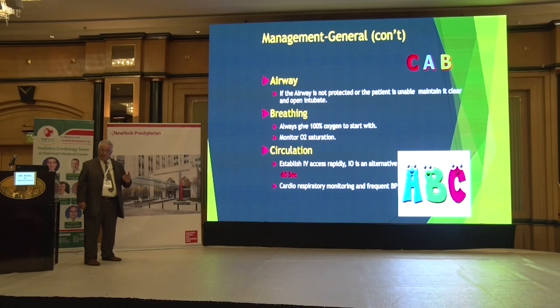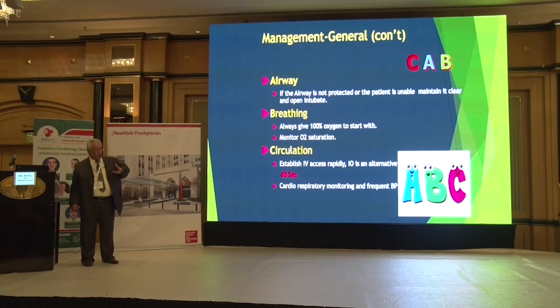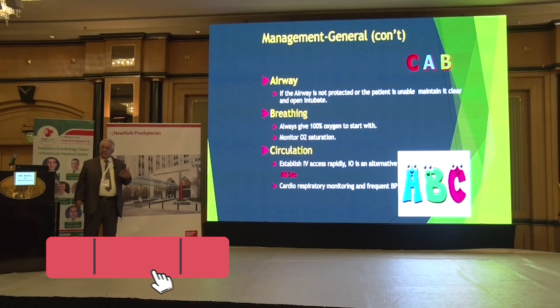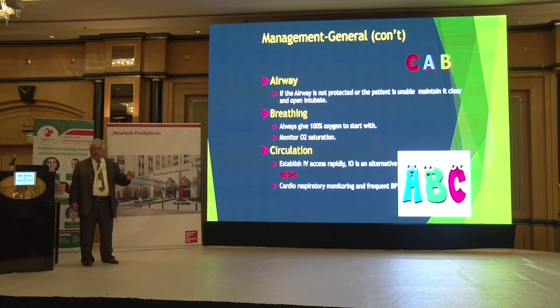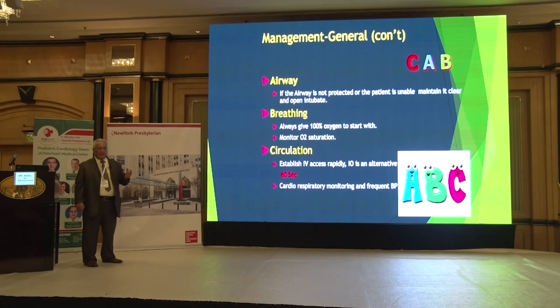If your patient is unresponsive, you start with CAB; if responsive, maintain ABC. Maintain the airway — if the patient cannot maintain it, help; if they cannot keep it open, intubate. Breathing: give 100% oxygen; if not adequate, intubate and ventilate. Circulation: the rule of 60 — within 60 seconds you must have a peripheral IV line, or if you cannot, place an intraosseous line, which takes only five seconds, and you can give anything through it that you would give IV.